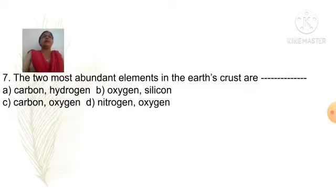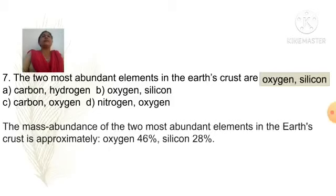The two most abundant elements in earth's crust are: Option A carbon hydrogen, Option B oxygen silicon, Option C carbon oxygen, Option D nitrogen oxygen. Answer is Option B oxygen silicon. The mass abundance of the two most abundant elements in earth's crust is approximately oxygen 46% and silicon 28%.